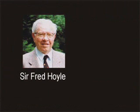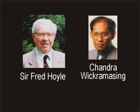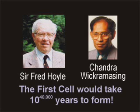British scientist Sir Fred Howell teamed up with mathematician and astrophysicist Chandrawick Rama Singh to calculate the probabilities for that first living cell. After working on the problem for several weeks, they came up with an astounding number. They estimated that it would likely take about 10 to the 40,000 power number of years for the first cell to occur randomly. But this is a period of time many times greater than the age of the universe.